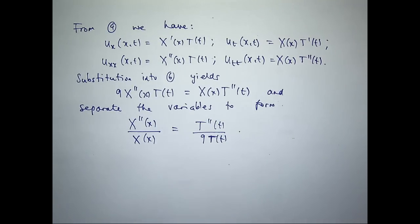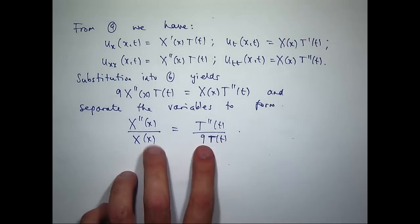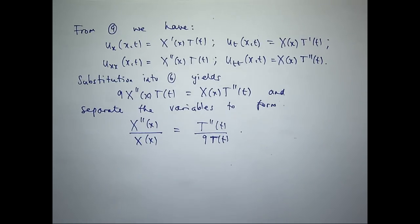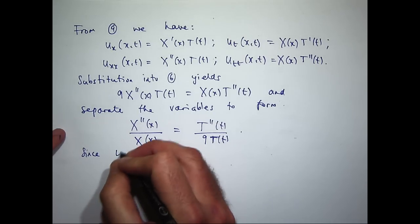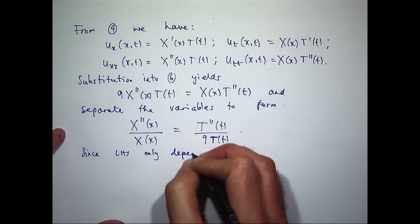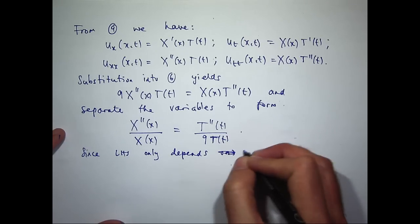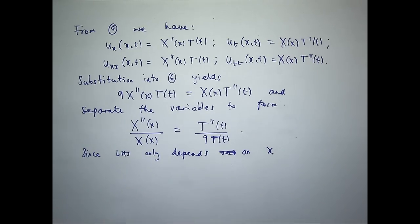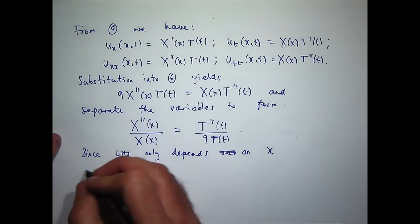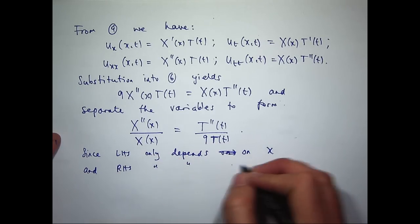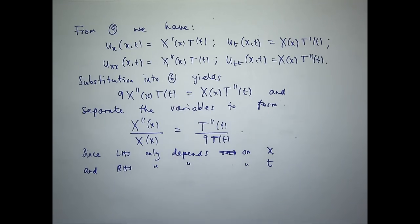We can now justify the existence of a separation constant — say gamma — such that these two ratios are equal to a constant. Since the left-hand side only depends on x and the right-hand side only depends on t, I claim these ratios must be equal to a constant.